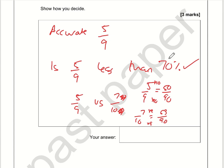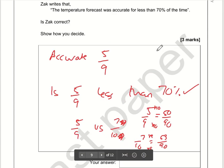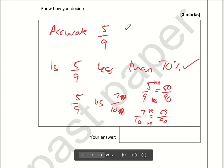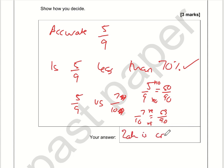Does that confirm or disprove what Zach said? Zach writes that the temperature forecast was accurate for less than 70% of the time. We've proved that 5 out of 9 is less than 70%, so Zach is correct.